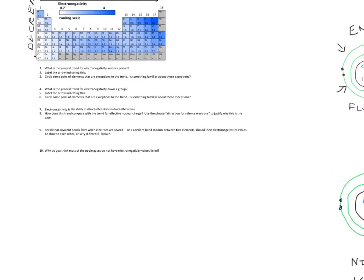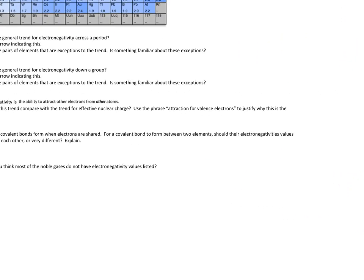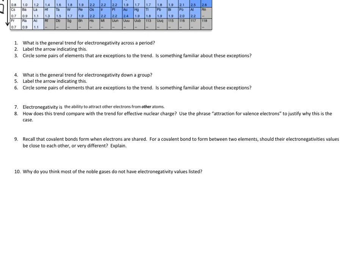And so question number nine asks, for a covalent bond to form between elements, should their electronegativities be close to each other or very different? Covalent bonds are sharing electrons. So if one vastly overpowers the other, they're not going to be sharing. So the electronegativities need to be kind of similar.